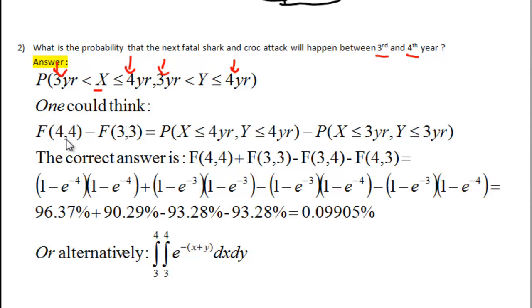One could think that it's the same as big F of 4 and 4, and minus big F of 3 and 3, i.e., probability that the next croc and shark attack is less than 4, minus probability that the next shark and croc attack is less than 3 years. It turns out that this is completely wrong, this reasoning.